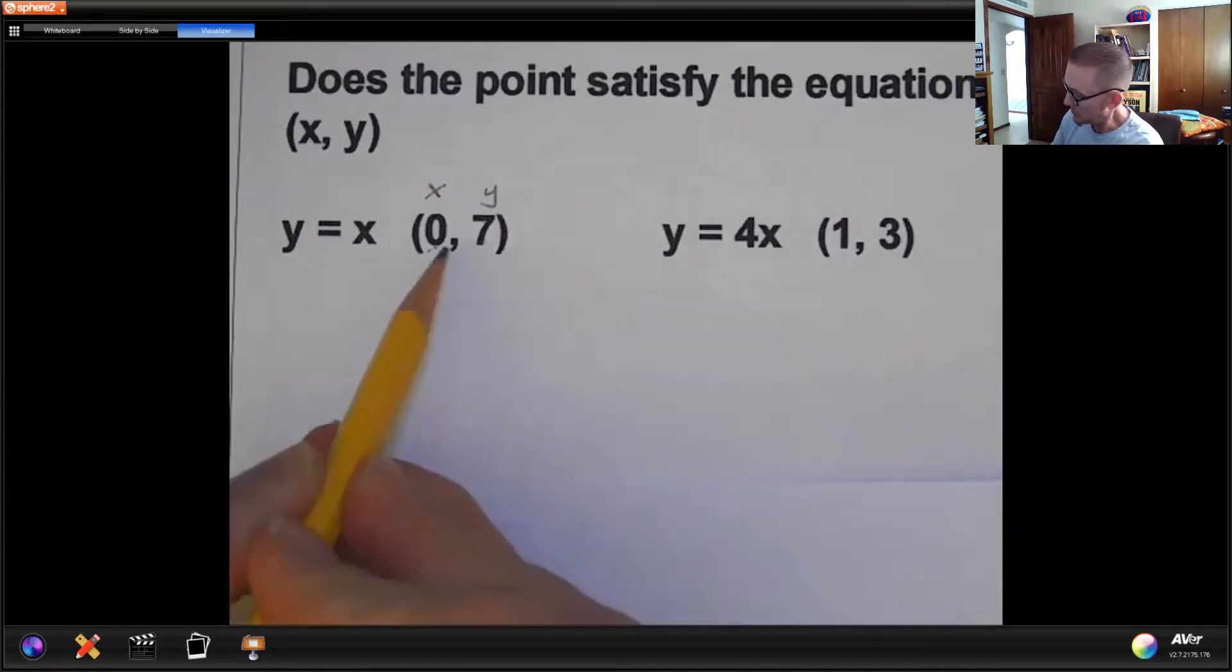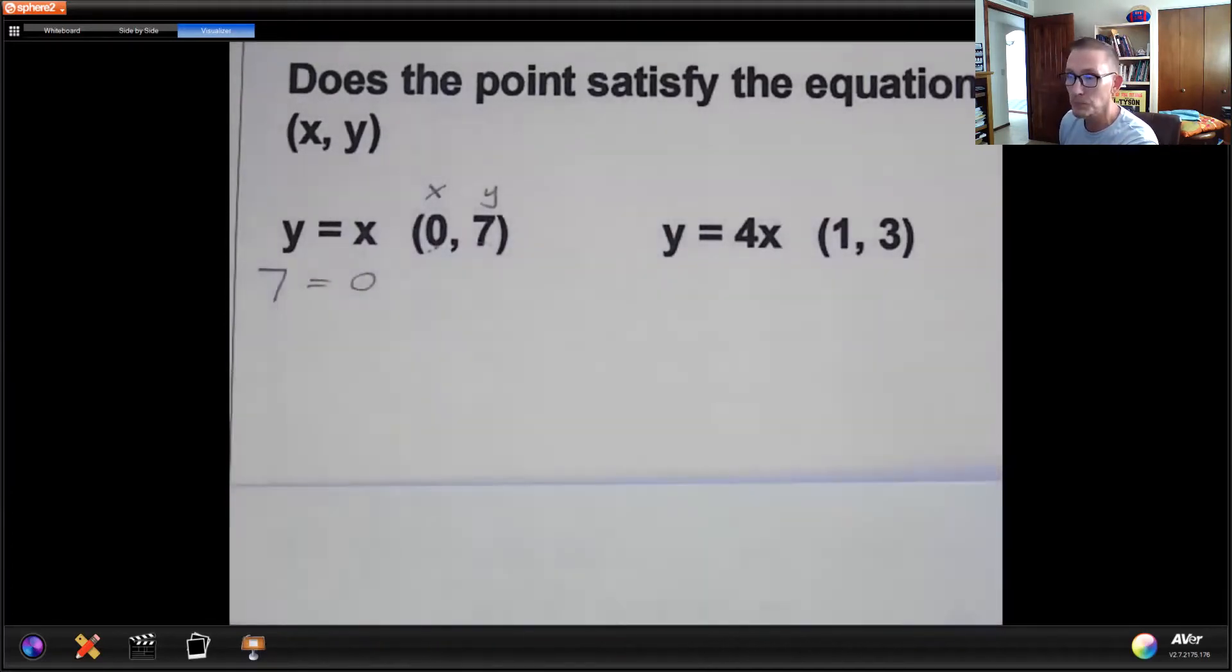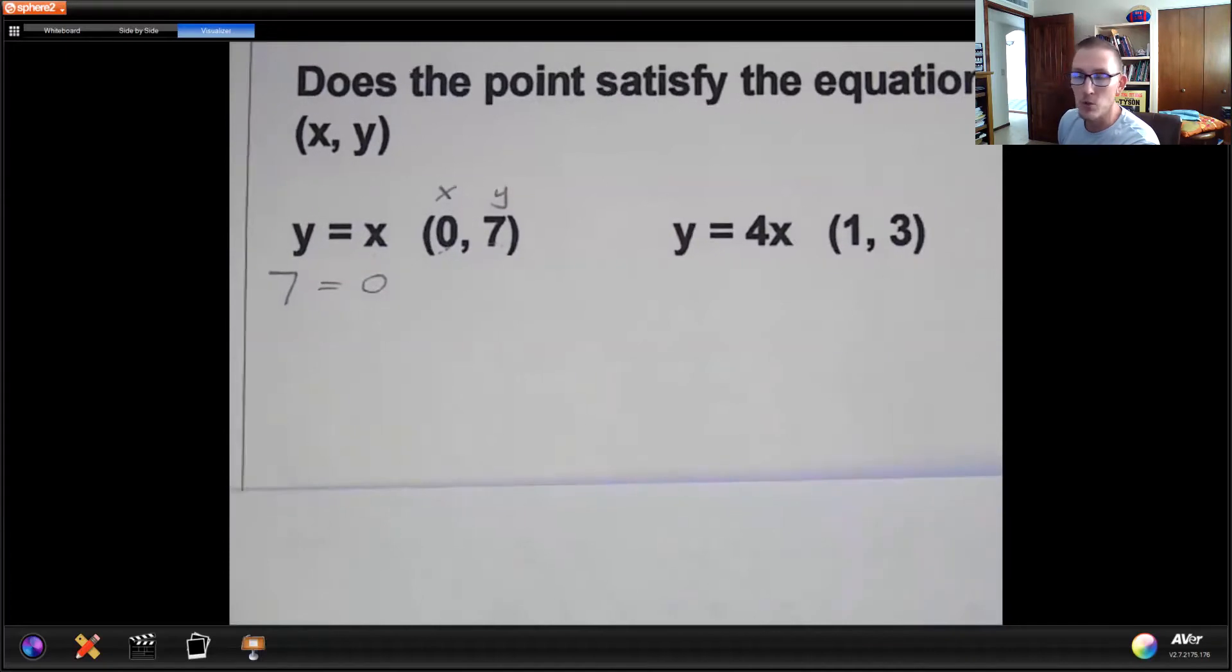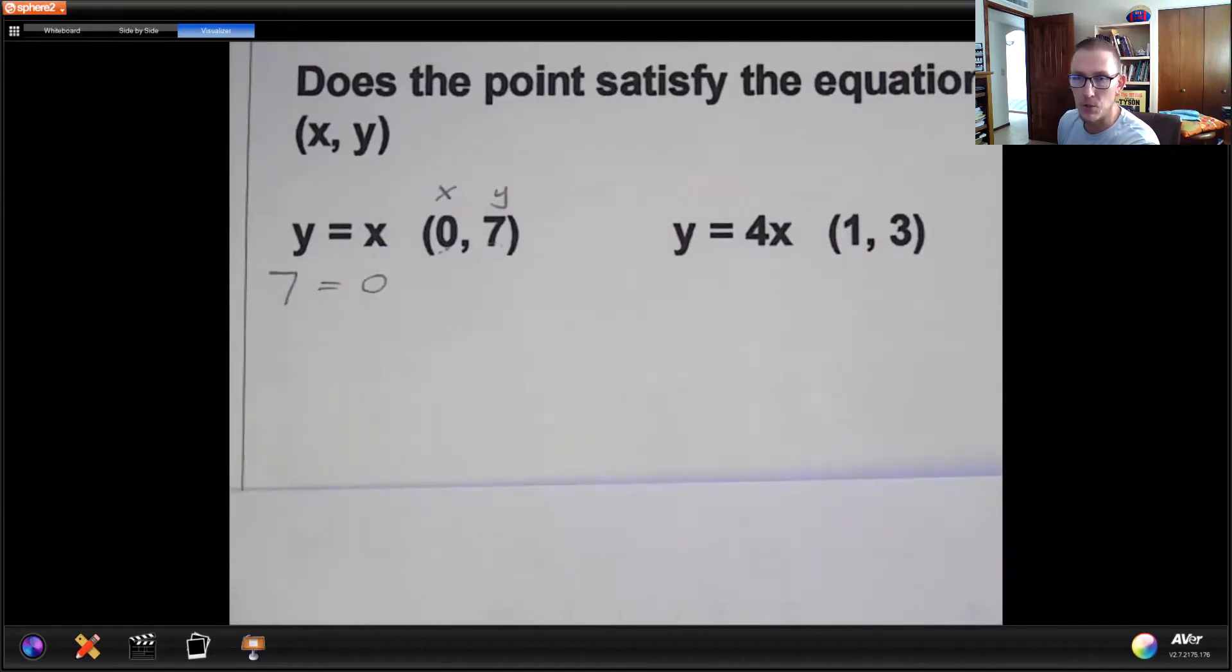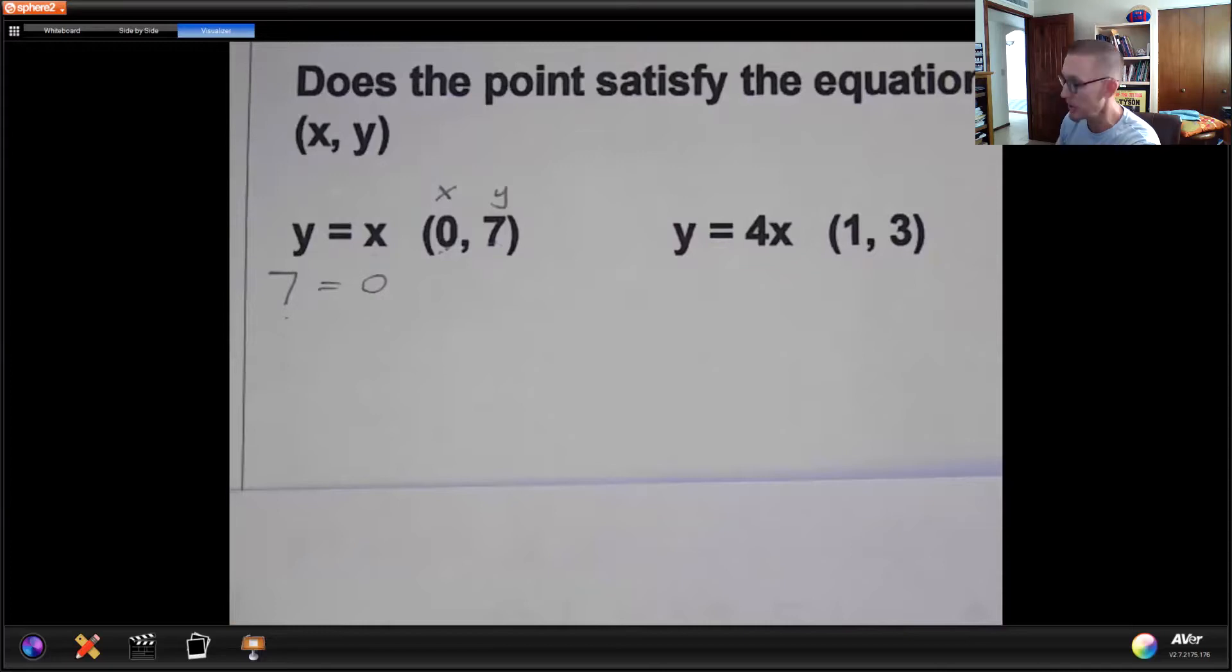So I'm going to take this zero and I'm going to plug it in for the letter x. So that becomes zero. I'm going to take the seven because that's the y value and I'm going to plug it in right here. So when I plug those two values in, there is nothing else to do. There's no adding, there's no multiplying. Does seven equal zero? And the answer is no. Seven does not equal zero.